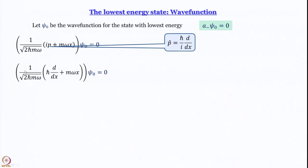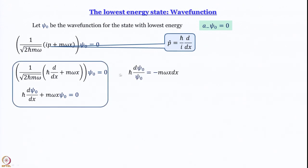We can get rid of the factor 1/√(2ℏmω) since it is not equal to zero, so the rest has to equal zero. This gives us: ℏ · dψ₀/dx + mωx·ψ₀ = 0 — a simple first-order equation. Rearranging to separate variables, we get: ℏ · dψ₀/ψ₀ = −mωx · dx.